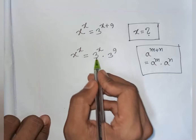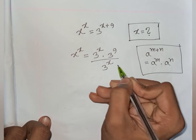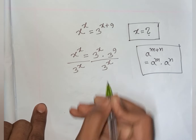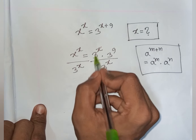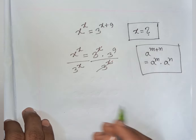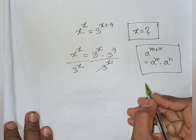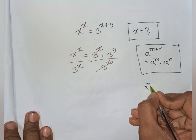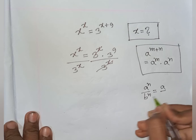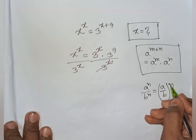Now we divide both sides by 3^x. This 3^x will be cancelled. We have same power but different base on the left side, so using the rule a^n / b^n = (a/b)^n.